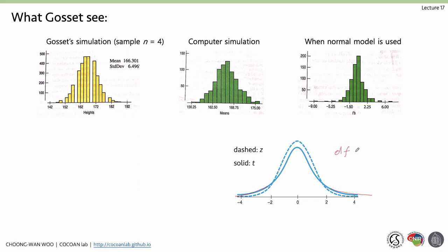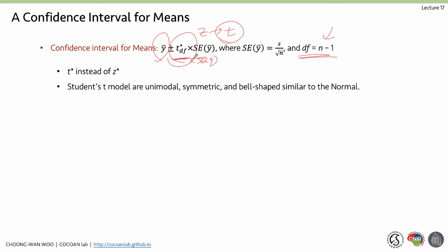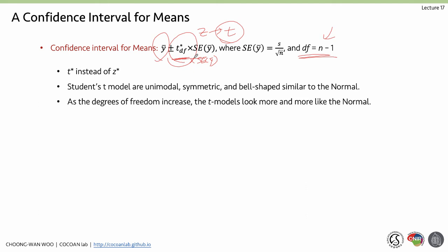After figuring out the t-value, everything else is the same. The confidence interval for means is y-bar plus or minus the critical value times the standard error of the mean. The critical value is now t instead of z. To find the t-value, we need the degrees of freedom, because the shape of the t-distribution changes with degrees of freedom. Student's t-models are unimodal, symmetric, and bell-shaped, similar to the normal. As degrees of freedom increase, the t-model looks more and more like the normal; the largest difference is observed when degrees of freedom is very low.